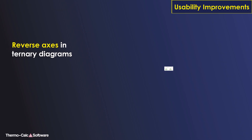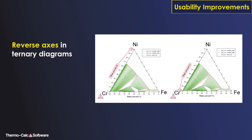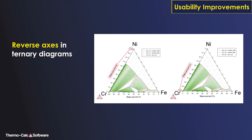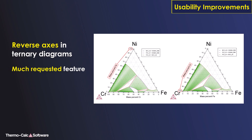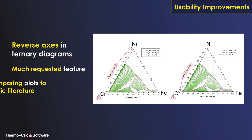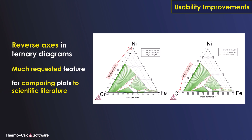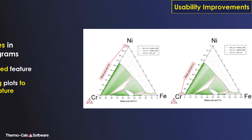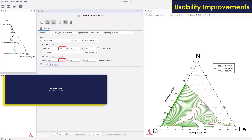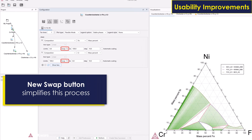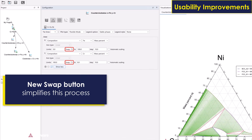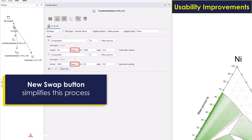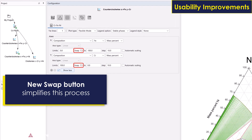Users can now reverse axes in ternary diagrams, a much-requested feature for comparing Thermo-Calc plots to those found in scientific literature. And a new Swap button simplifies this process in all 2D plots.